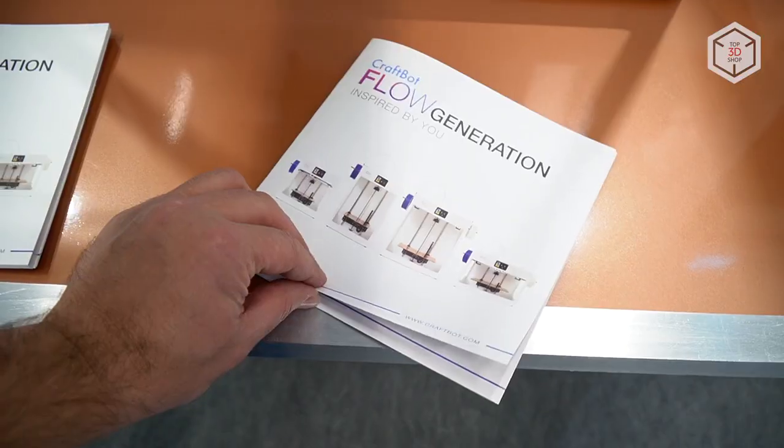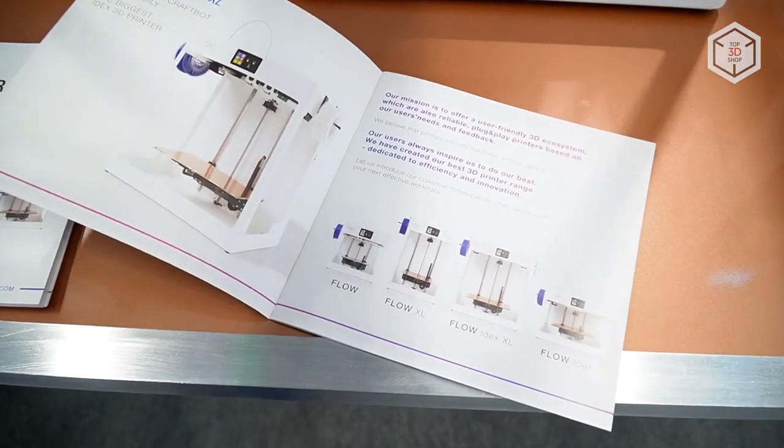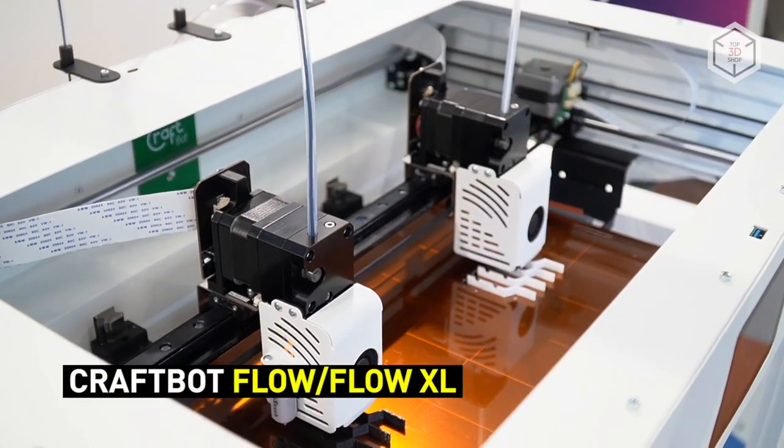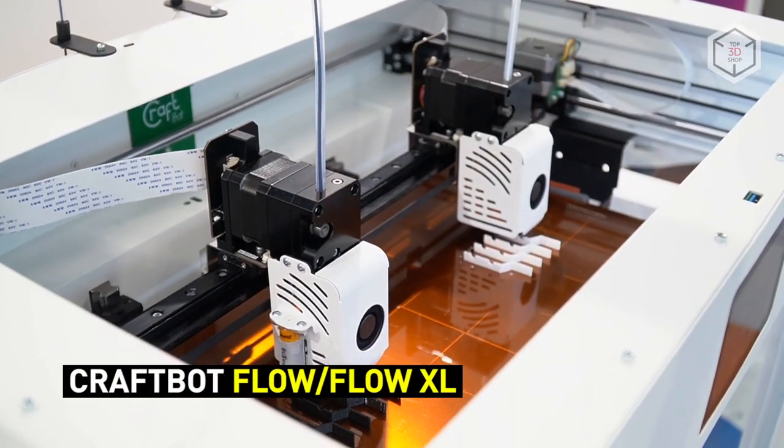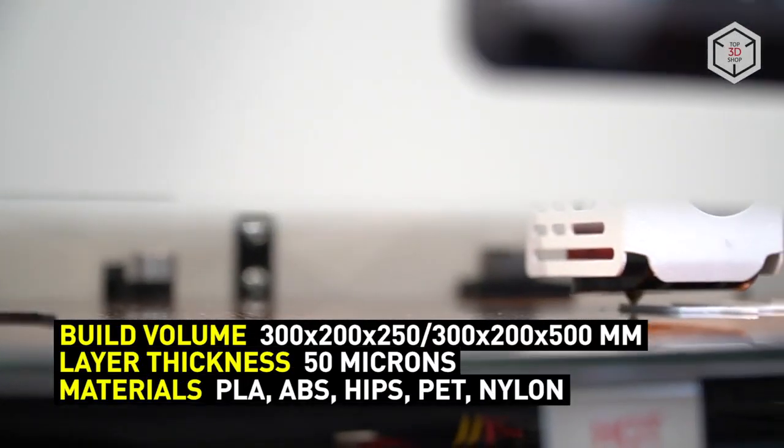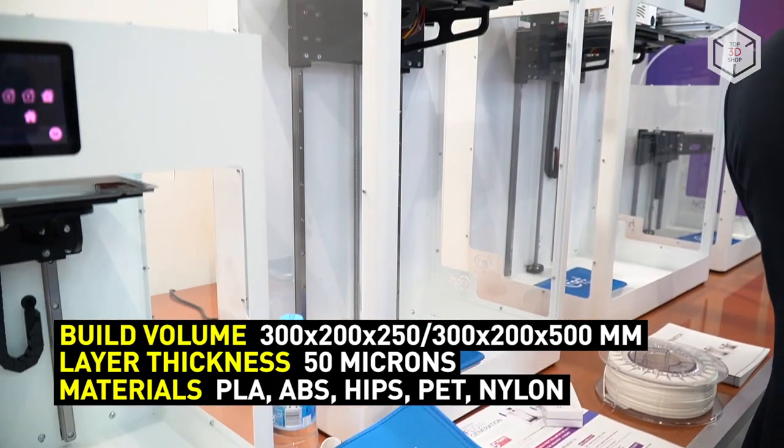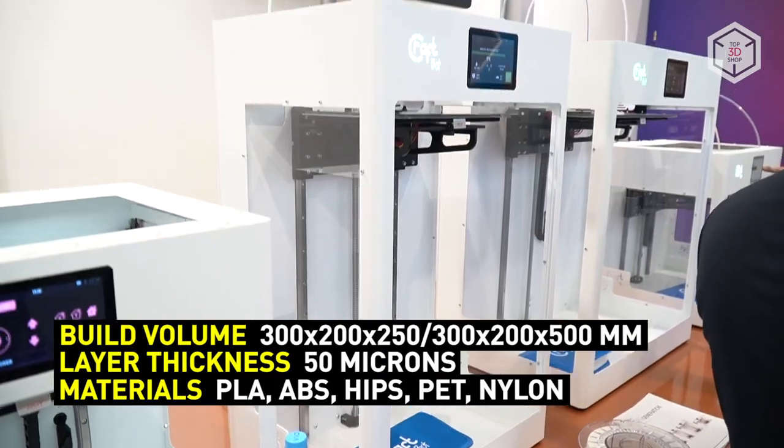The Flow series includes 4 devices, varying in build volume and availability of single or dual extrusion. All FDM 3D printers produced by CraftUnique are plug-and-play devices that can work right out of the box. This is true for every model, from the smallest Flow printer to the company's flagship IDEXX-XL.